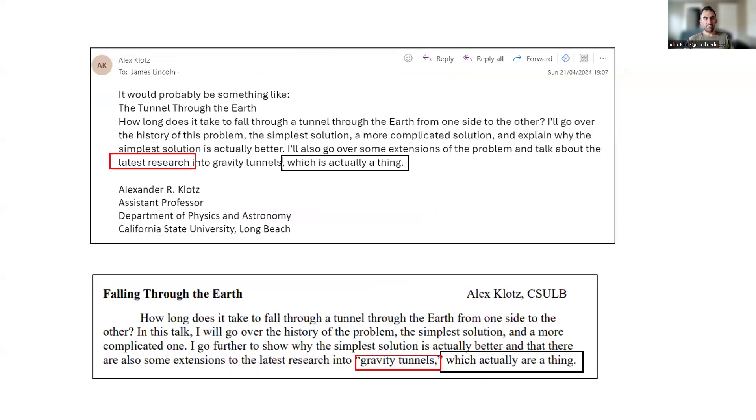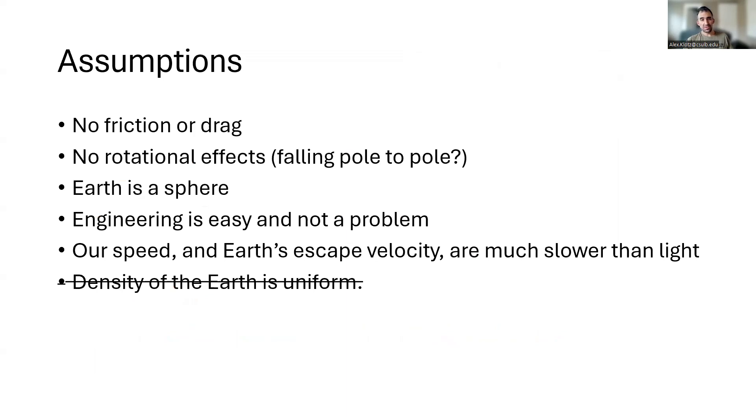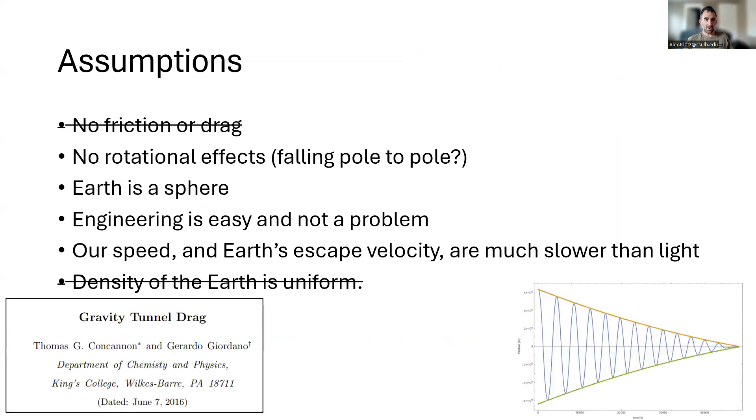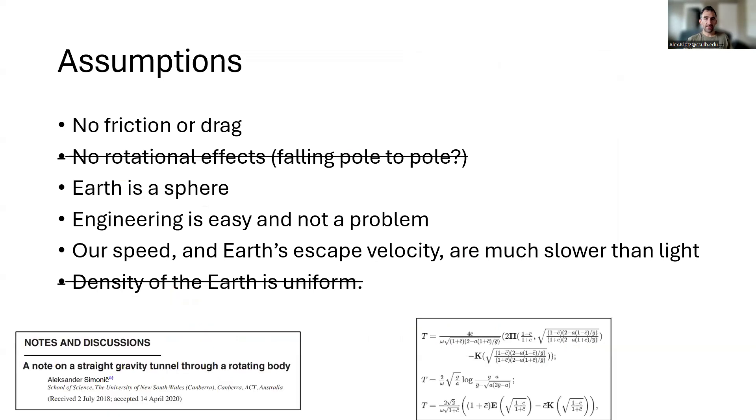So if we go back to our list of assumptions and want to do away with the assumption that there's no friction, we can look at Concanon and Giordano, who talked about that. If you want to consider rotation, that makes things a lot more complicated. You're no longer guaranteed to reach the other side. You might get stuck in the middle, you might get flung out into space, but you can read this paper by Simonich, and there are some others out there as well.